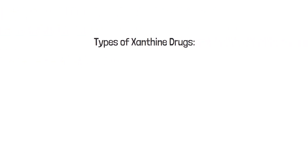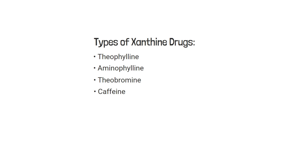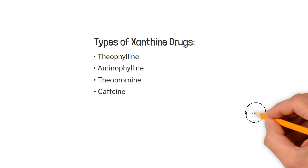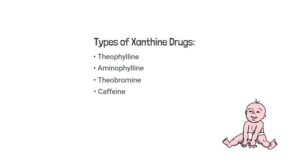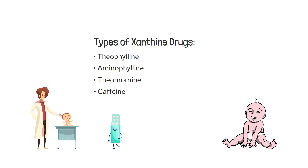Some examples of methylxanthines include theophylline, aminophylline, theobromine, and caffeine. Methylxanthines are also often effective in treating infants with poor respiratory drive and those experiencing episodes of apnea — this is especially true in premature and low birth weight infants. Methylxanthines can be administered orally in tablet form or as an oral solution, and can also be delivered intravenously.